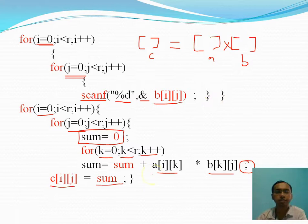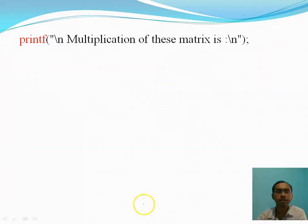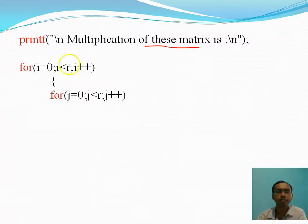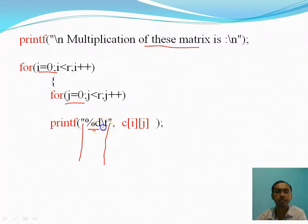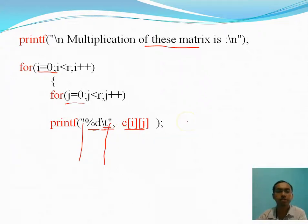We store sum into C[i][j]. Finally, to print the result, we will write two for loops for i and j. Inside, we use printf with %d and \t — %d is the format specifier for integer and \t gives a tab space while printing. We then print C[i][j], which is the result matrix.